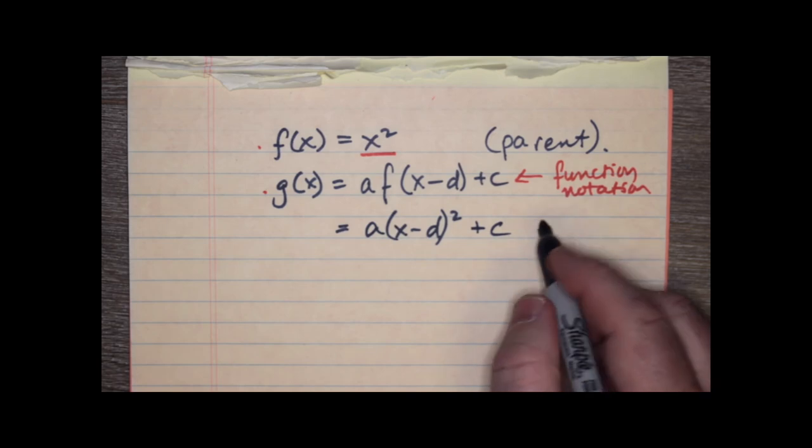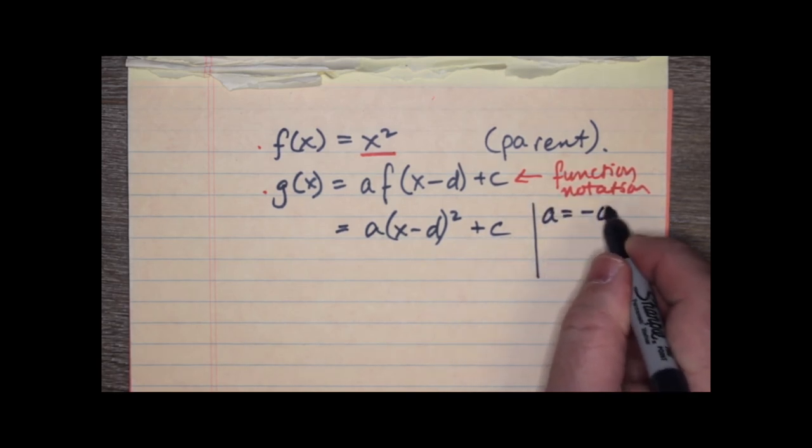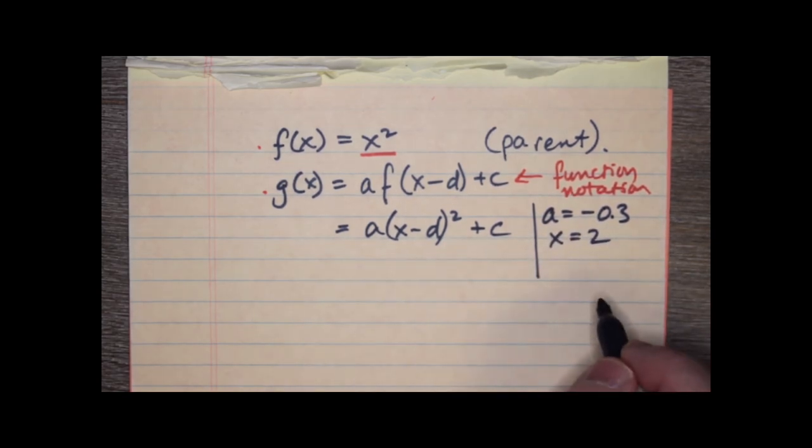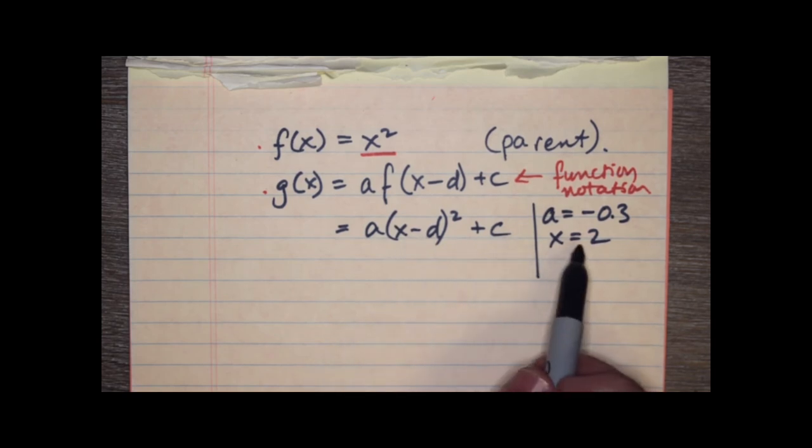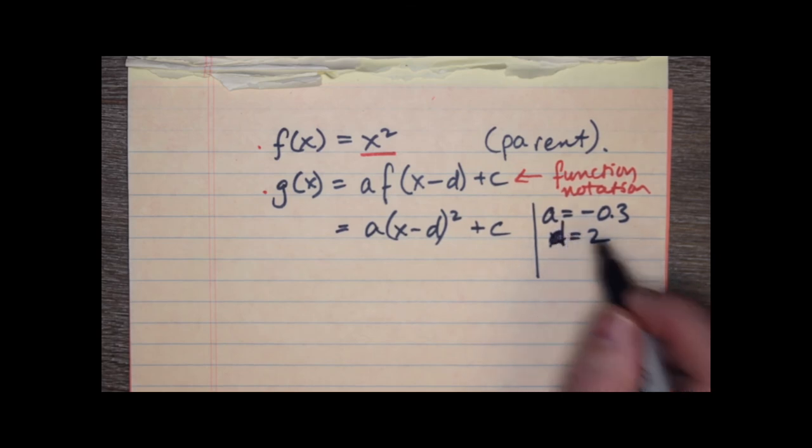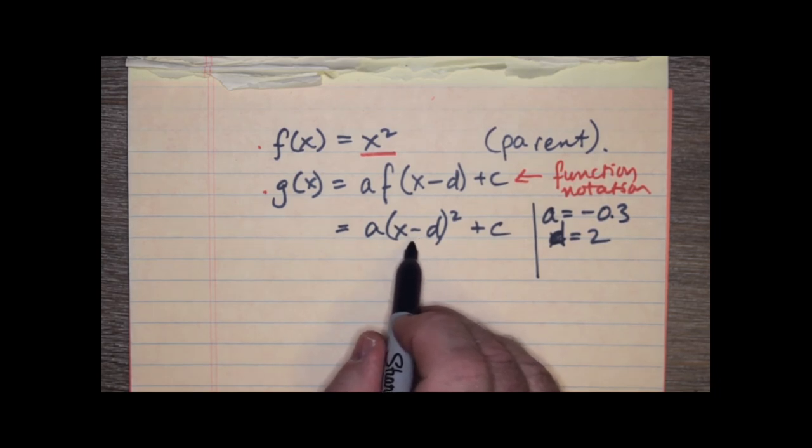Now, in this case, we had a number of things. a was negative 0.3, x equals 2, not minus 2, because this d is already negative. So, x is positive, or sorry, not x, d. d is positive, not x. So, d is positive, because there's a minus sign in front of the d, and we do mean x minus 2 when we finish this.